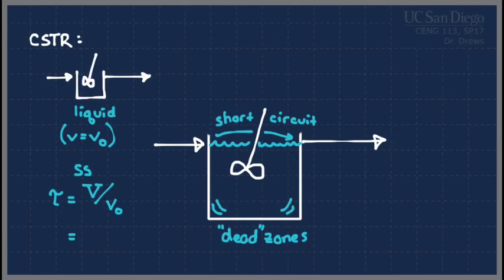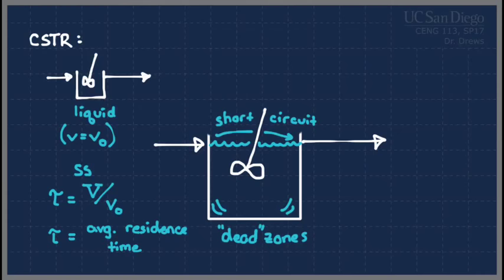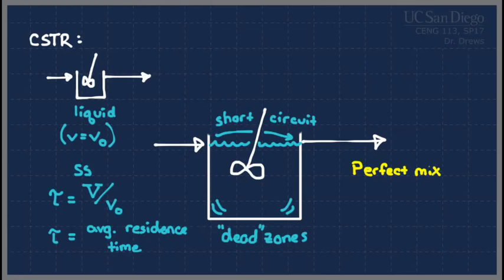That's something we didn't really have to use with a plug flow or packed bed reactor, because we assumed it all moved in a plug from one side to the other. We could calculate a velocity or a residence time if we needed to, but it wasn't something we had to worry about. All of our CSTRs are going to assume what's called perfect mixing.